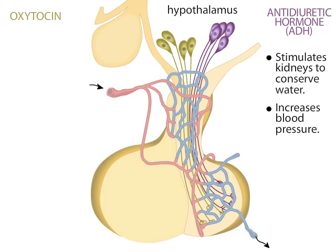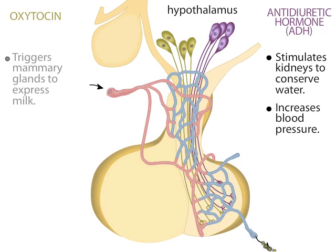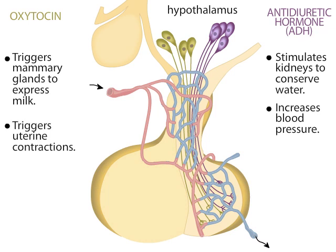The oxytocin-producing neurons respond to stimulation from a suckling baby. When these neurons fire action potentials, they release oxytocin into the general circulation. Oxytocin reaches the mammary glands, triggering them to express milk. These neurons are also activated during childbirth, during which oxytocin triggers uterine contractions.